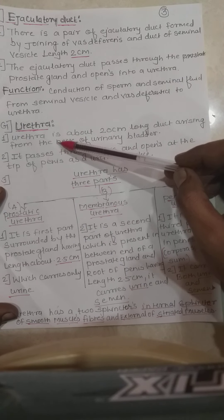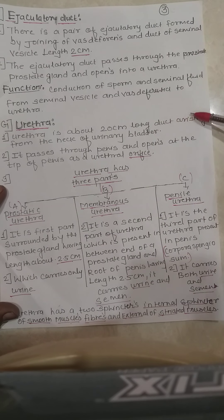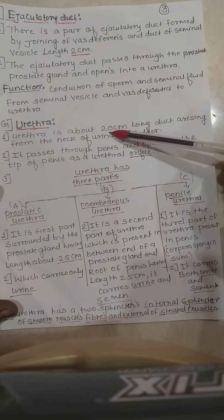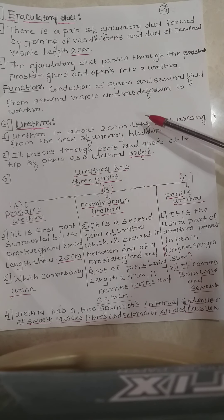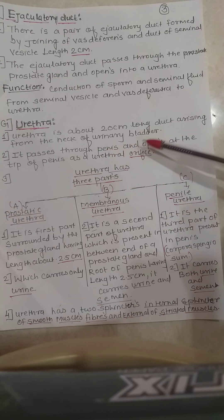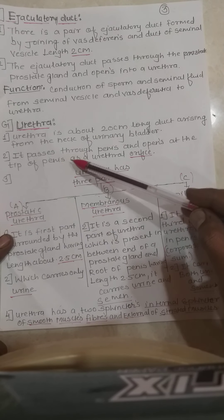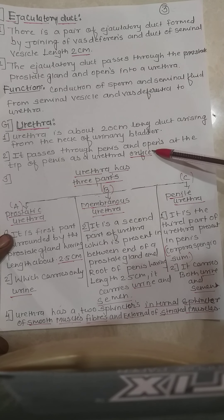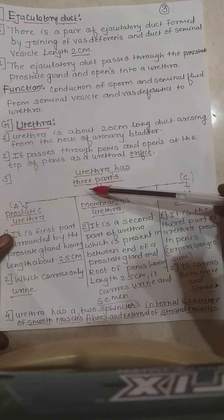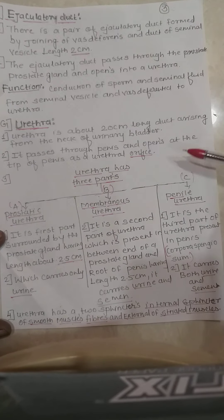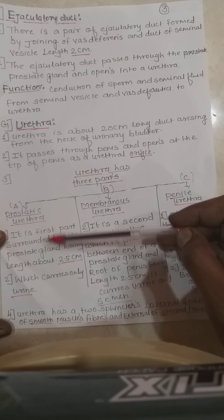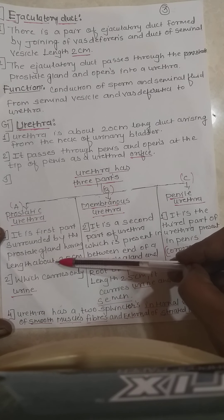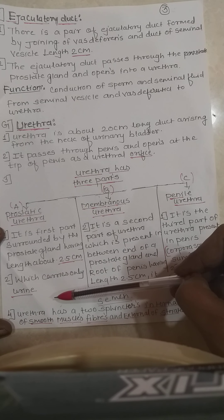The urethra is about 20 centimeters long, arising from the neck of the urinary bladder — as studied in the chapter Excretion and Osmoregulation. It passes through the penis and opens at the tip of the penis as the urethral orifice. The urethra is divided into three parts. The first is the prostatic urethra: surrounded by the prostate gland, about 2.5 cm long, and carries only urine.